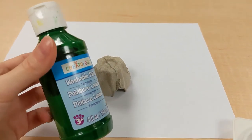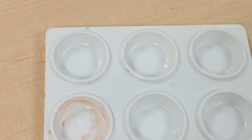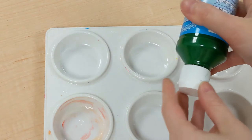To color the shell, I'm going to be using some green paint. You can also use markers, crayons, or whatever else you can find.